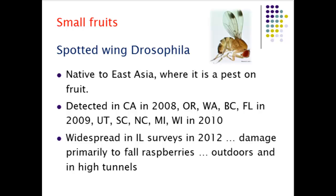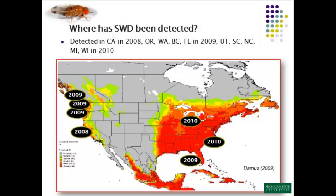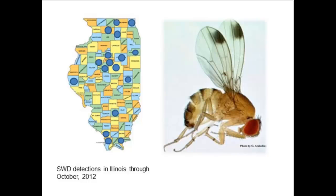Spotted wing drosophila appeared in California in 2008, spread to the Northwest in 2009, and reached the mid-Atlantic and Michigan in 2010. It's a fruit fly that develops in fruit as it is ripening — unlike most fruit flies that only attack overripe or damaged fruit. It has been moved around with infested ripe fruit that was picked, packed, and shipped. Last summer trapping around Illinois found it pretty much wherever traps were placed; it's distributed throughout the state.